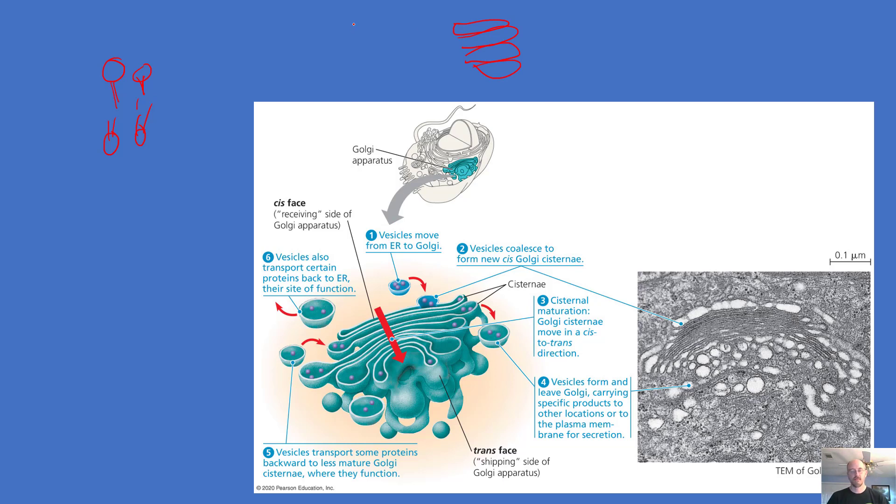Transport vesicles emerge from the ER full of proteins and lipids and other things that it made, perhaps some carbohydrates, and they make their way to the Golgi.